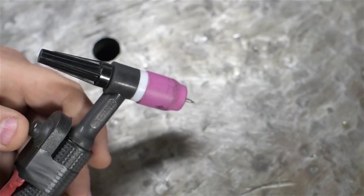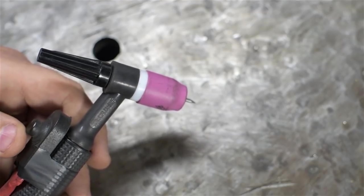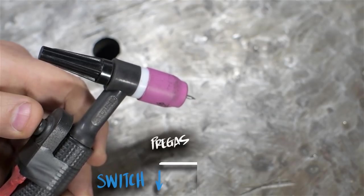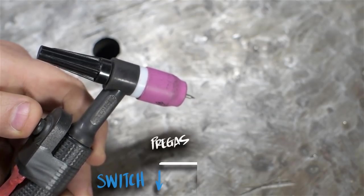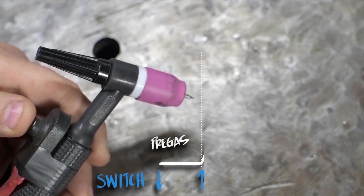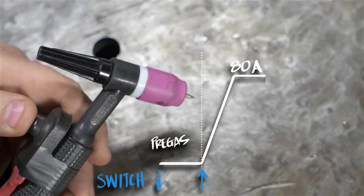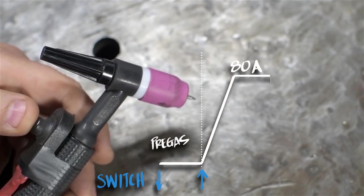Okay, say you have the machine set to 80 amps peak and, I don't know, maybe 40 amps final or 50% peak current. You push the button and you get pre-gas for as long as you keep that button held down. You let it go and it starts to ramp up to your 80 amp peak.